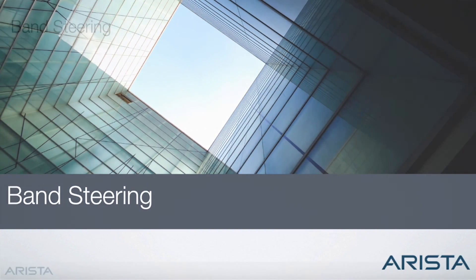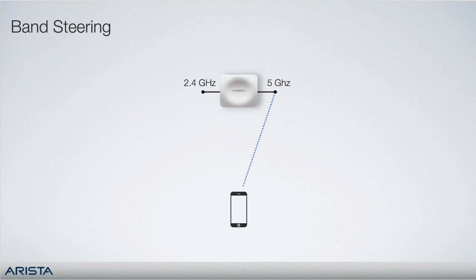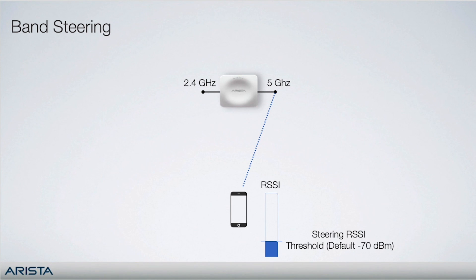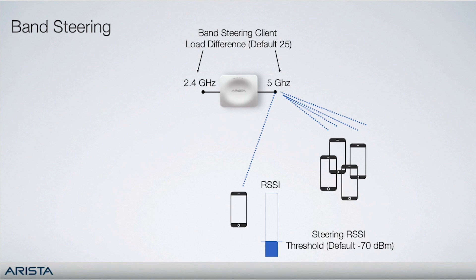Band steering steers dual band clients that support both 2.4 and 5 GHz to the 5 GHz band for better performance and less interference. Like other steering methods, the APs do this intelligently so as not to impact overall performance. Dual band clients are always steered to 5 GHz unless the 5 GHz RSSI of the client is very low — crossing the steering RSSI threshold — or the 5 GHz radio is already excessively loaded compared to the 2.4 GHz radio, determined by the band steering client load difference parameter. In these cases, the AP will steer to the 2.4 GHz radio instead. Like with smart steering, when the steering attempts threshold is exceeded, the client is placed into a steering blackout period.